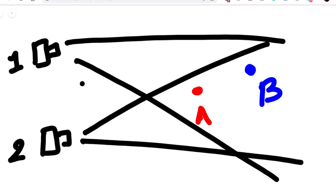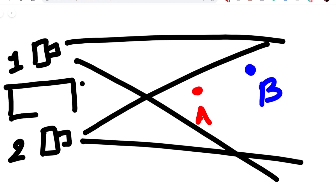Even though both cameras are facing the same direction and they are both looking at similar points, if we draw out the field of view for camera one, we can see that for camera one, point A is to the right of point B.